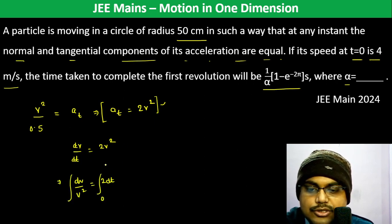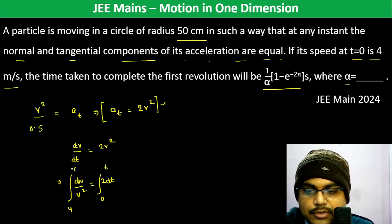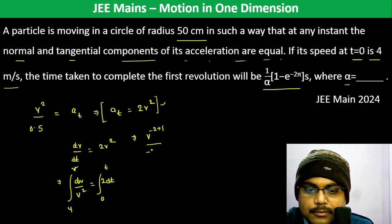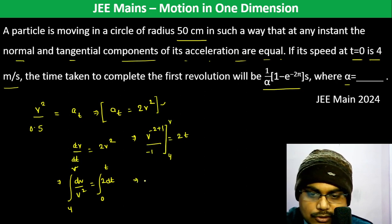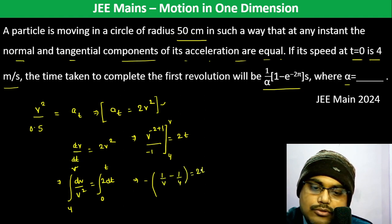Integrating from time t = 0, this becomes v to the power −2 + 1 divided by −1, equal to 2t, where the initial speed is 4. So it becomes −1/v, and we get 1/v − 1/4 is equal to 2t.